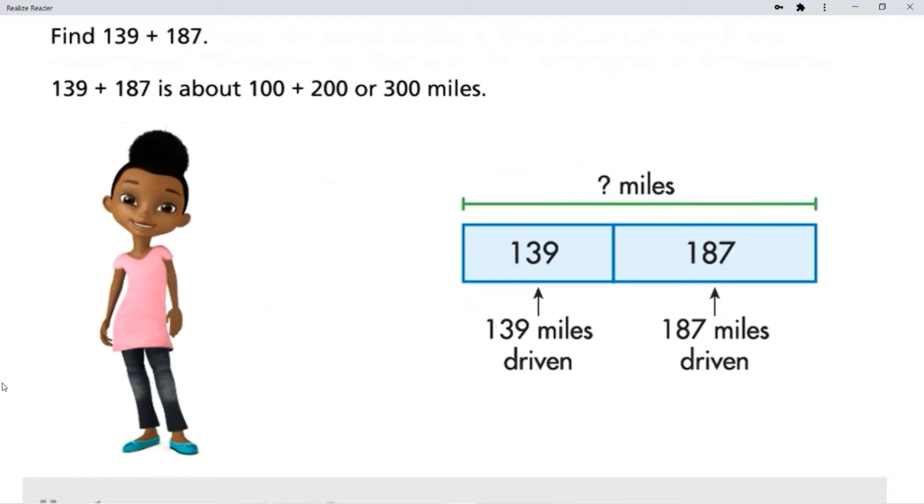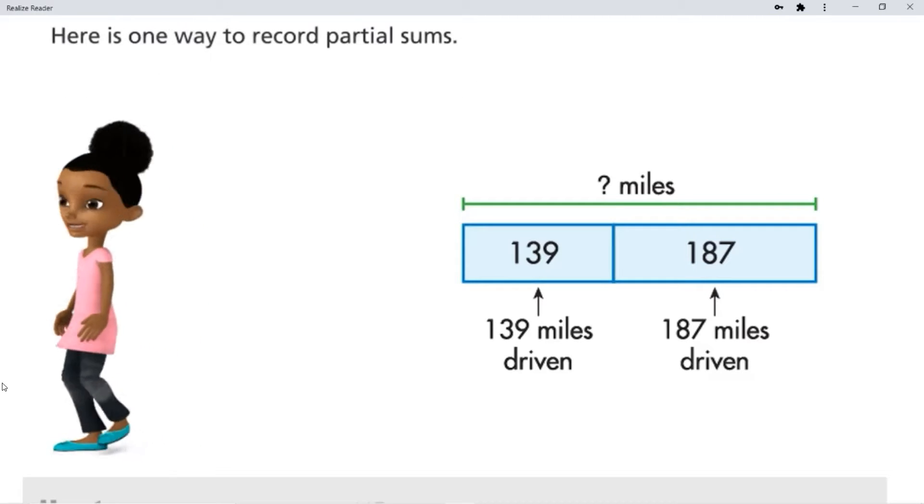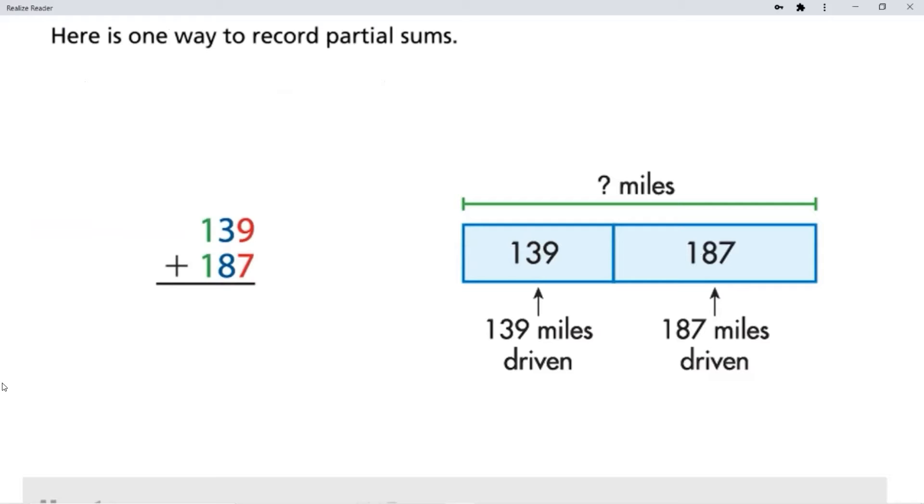Find 139 plus 187. 139 plus 187 is about 100 plus 200 or 300 miles. Here is one way to record partial sums.